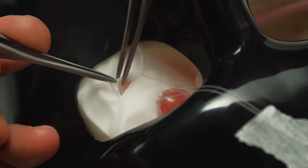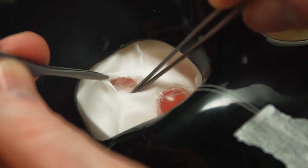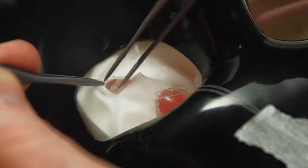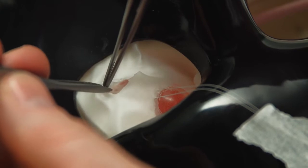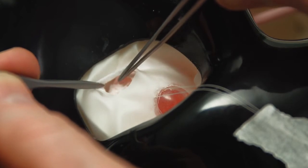The conjunctiva tenons is then reflected and you can just start to see the pinkish hue of the inferior bleak covered with its capsule coming into view.